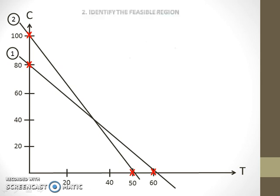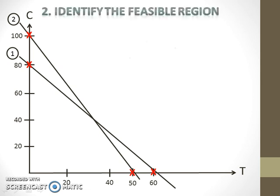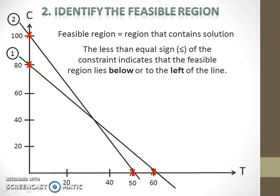A feasible region is the region that contains solutions. To identify the feasible region, look at the inequality signs of the constraints. The less than or equal sign indicates that the feasible region lies below the line or to the left of the line. For the first constraint, the sign is less than or equal, which means the region lies below the first line.